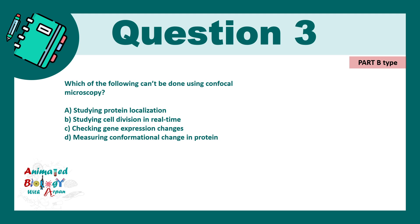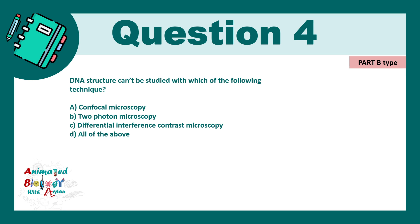Question 3: Which of the following can't be done using confocal microscopy? A) Studying protein localization, B) Studying cell division in real time, C) Checking gene expression changes, D) Measuring conformational change of a protein. This kind of application-oriented question is very common in CSIR NET. The correct answer is D. Conformational change of a protein can be analyzed using spectroscopy methods such as circular dichroism or NMR spectroscopy, but not confocal microscopy. Checking gene expression with microscopy is possible using reporter assays.